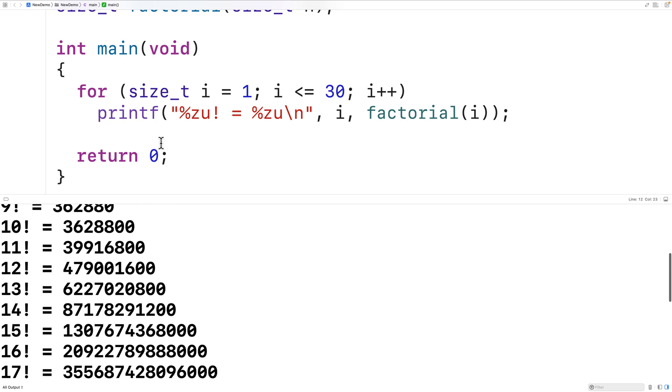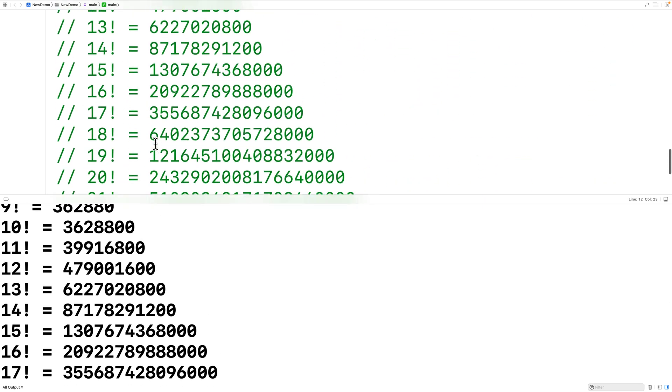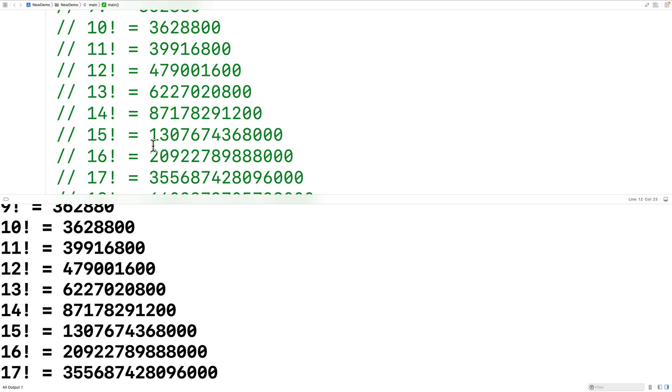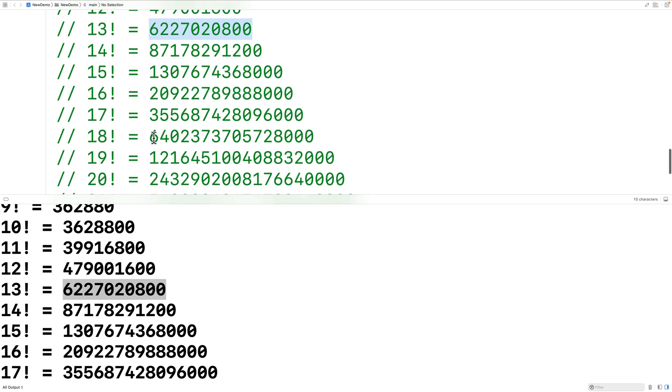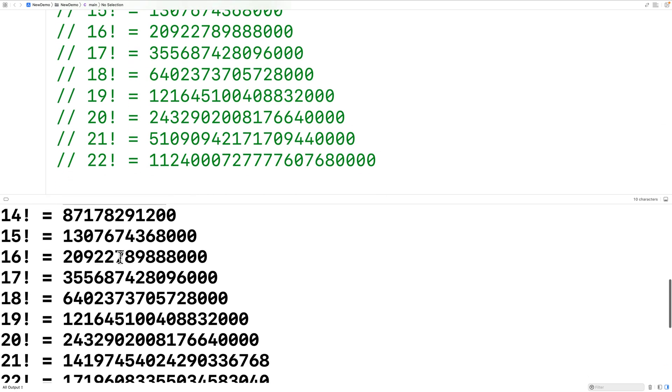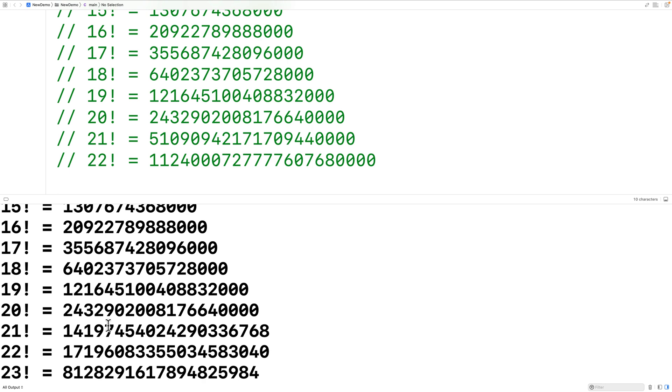And if we scroll down again, we'll see that our actual result for the factorial of 13 now matches the expected result. If we keep scrolling down, though, to the factorial of 21, we can now see the actual result does not match the expected result. So even when using size underscore T, we're going to run into this issue.